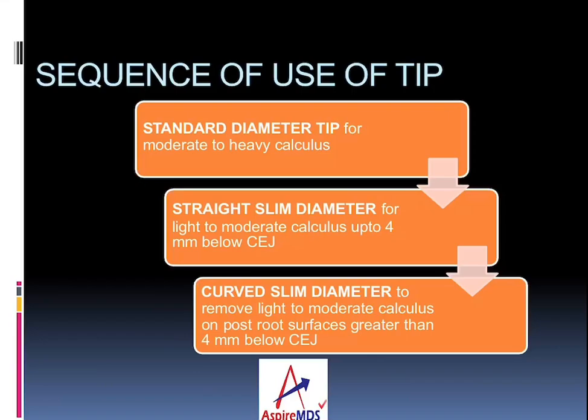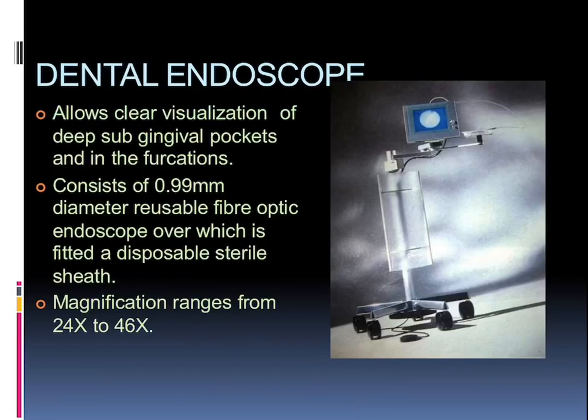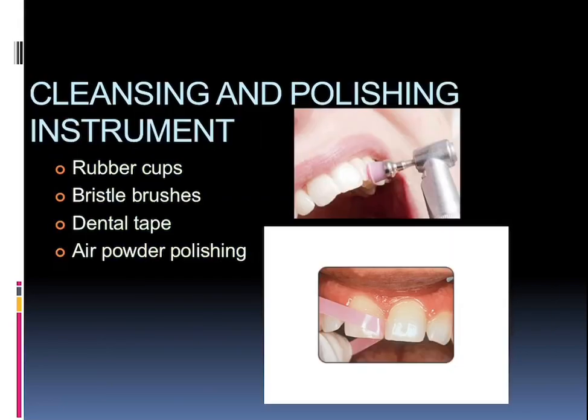Talking about the dental endoscope: it allows clear visualization of deep subgingival pockets and furcations. It consists of about a 0.99 mm diameter usable fiber optic endoscope over which a fitted disposable sterile sheath is present. The magnification ranges from 24x to 46x.